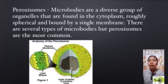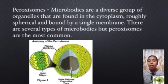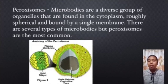Peroxisomes. Microbodies are a diverse group of organelles that are found in the cytoplasm, roughly spherical and bound by a single membrane. There are several types of microbodies, but peroxisomes are the most common.